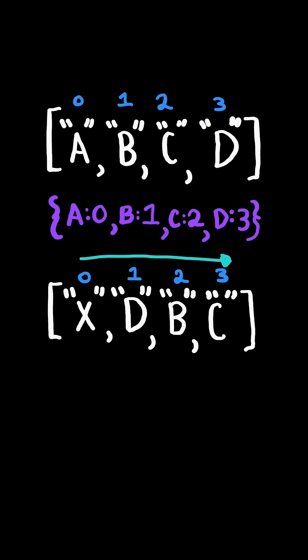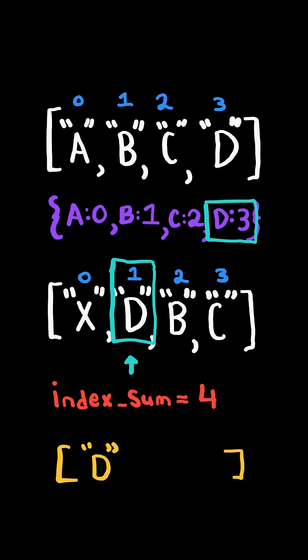Then we iterate through list 2. If the word does not exist in the map, we skip it. If the word does exist in the map, we keep track of the index sum and append the string to the resulting list.